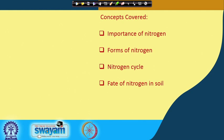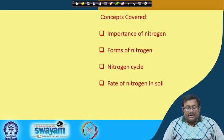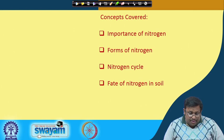First of all, we will see the importance of nitrogen, then we will see different forms of nitrogen, then we will see the nitrogen cycle and different processes which are involved in the nitrogen cycle, and finally we will see the fate of nitrogen in soil. Let us start with the nitrogen importance.